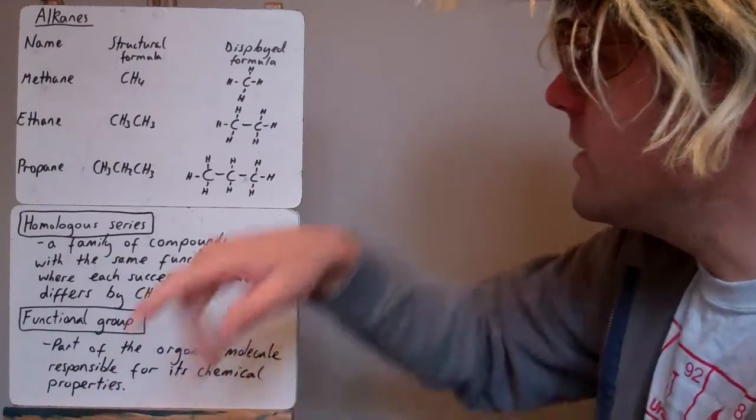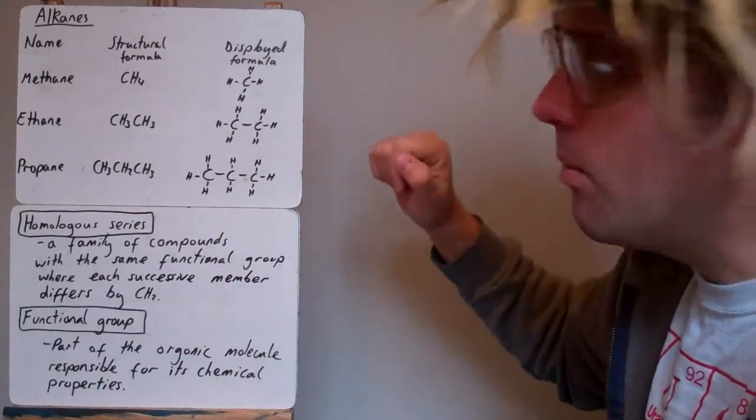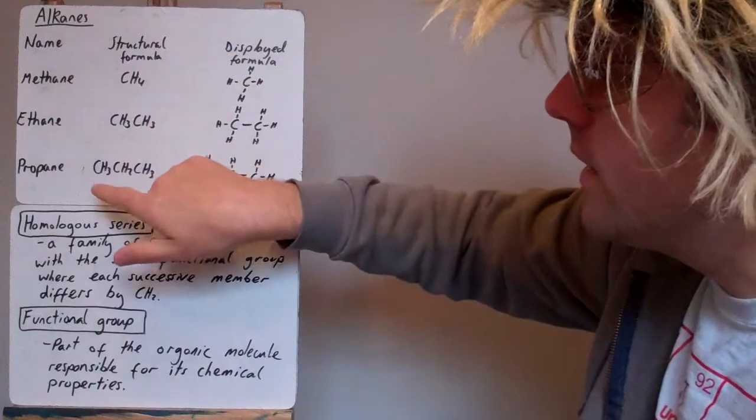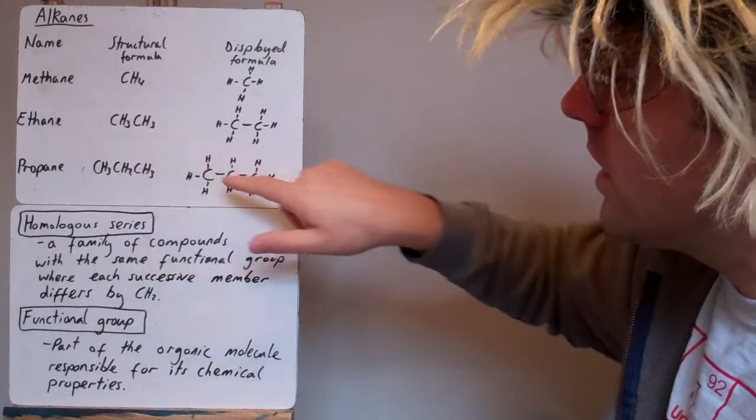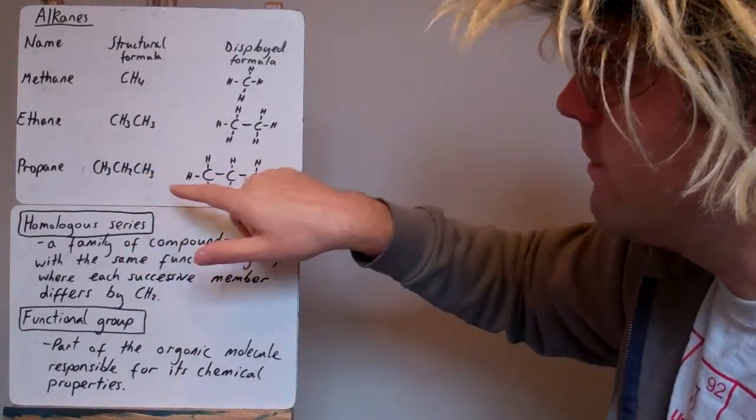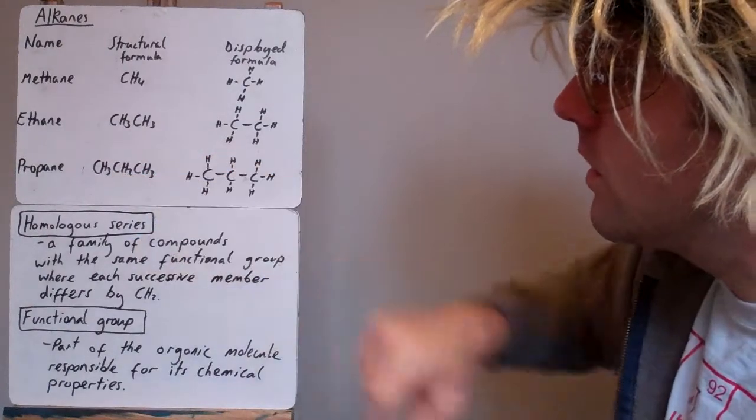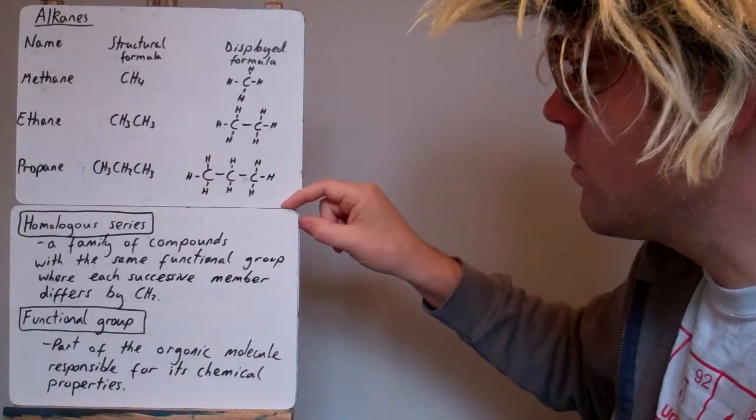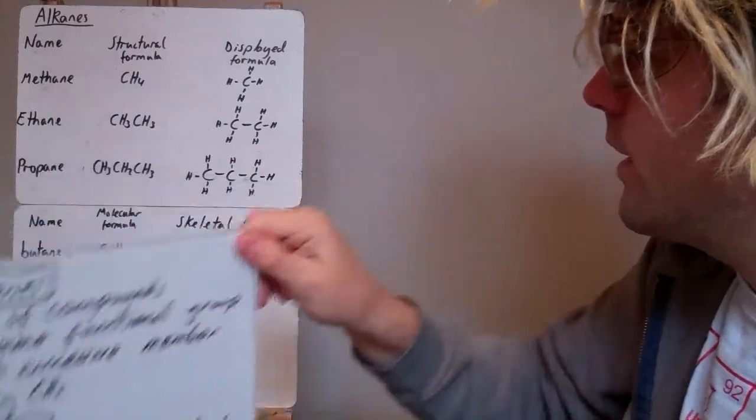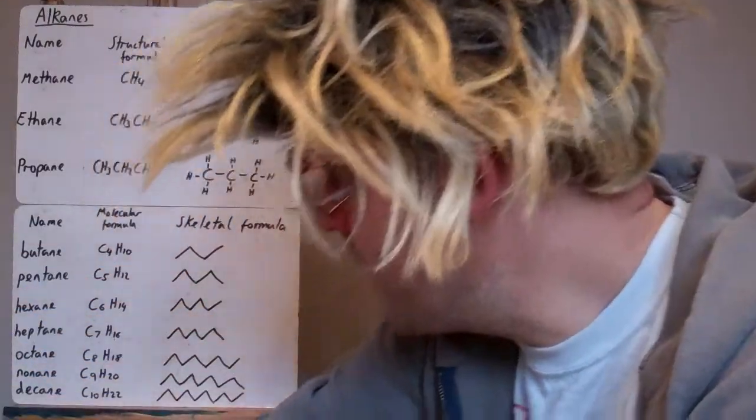Okay. So, that's displayed formula. You show every single bond. Structural formula, you're showing a simplified version of displayed formula. You're just taking the bonds out. And then, we'll carry on looking, we've got here skeletal formula and molecular formula as well.